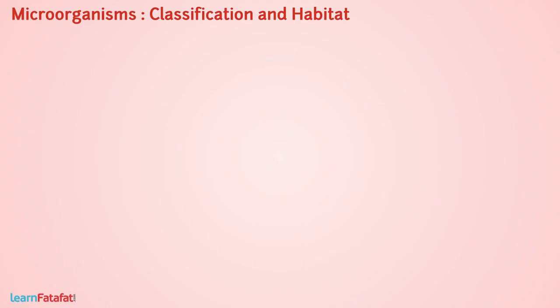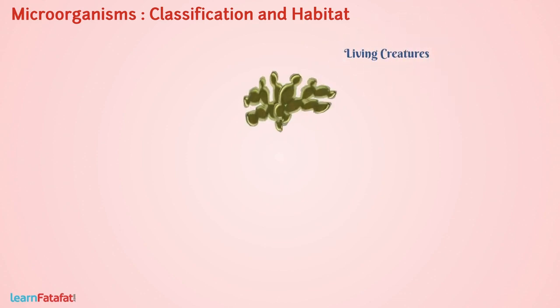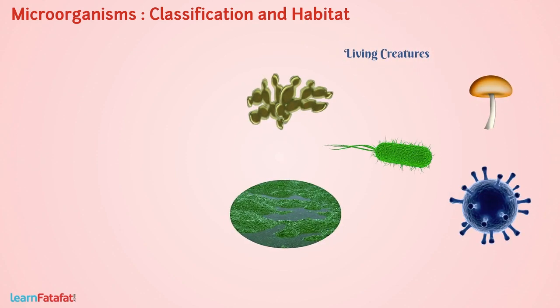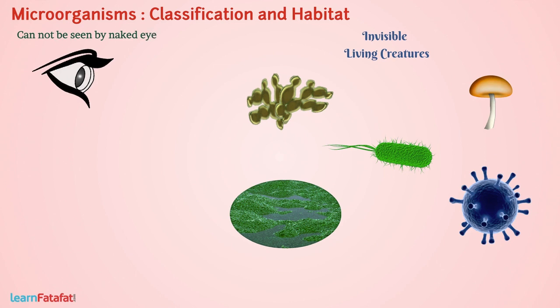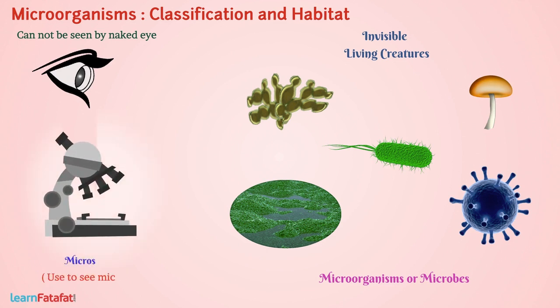Besides animals and plants, there is a world of living creatures that are present everywhere, but are so small that they cannot be seen by the naked eye. These are called microorganisms or microbes. In order to see microorganisms, we use a special device called a microscope.